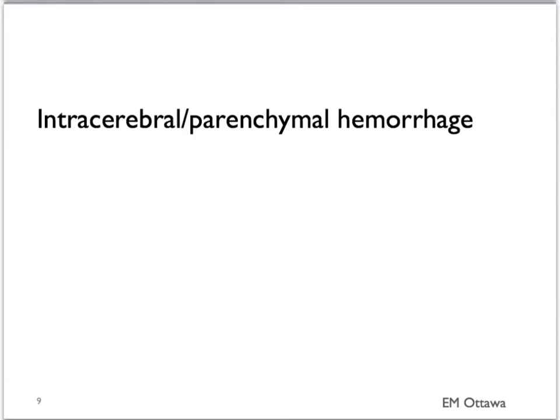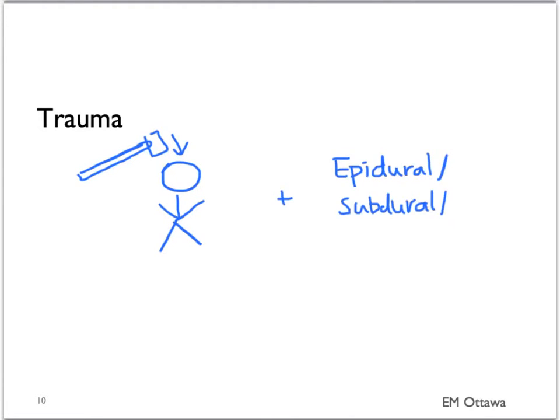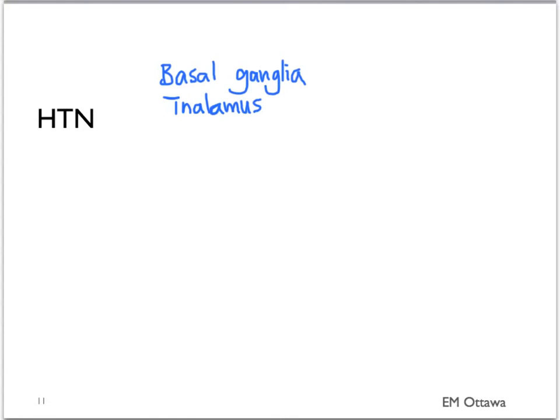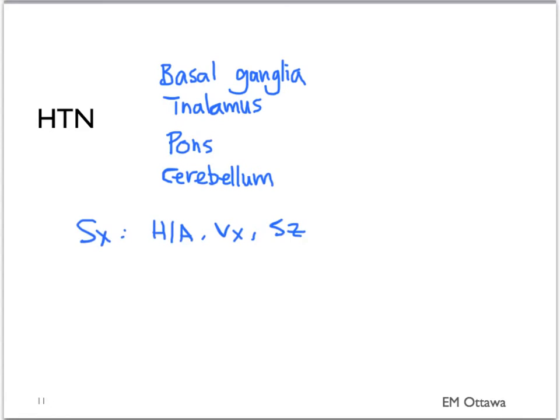We will now move on to intracerebral and parenchymal hemorrhage. Again, it can be divided into traumatic and non-traumatic causes. Trauma is caused by direct head injury and is often associated with other bleeds. The extent of the bleed determines the patient's presenting complaint and neurological status. For non-traumatic intracerebral bleeds, the main risk factor is hypertension. Common sites include the basal ganglia and thalamus, pons, and the cerebellum. The patient will present with sudden onset headache, vomiting, seizure, decreased level of consciousness, and focal neurological deficits corresponding to the part of the brain affected.